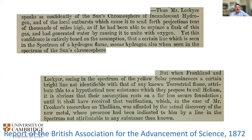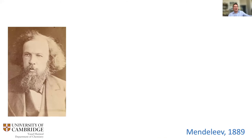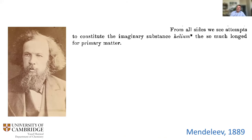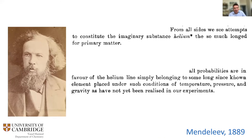Reports from 1872 were skeptical. Mendeleev, in his 1889 address, said: 'From all sides we see attempts to constitute the imaginary substance helium, the so much longed for primary matter.' He thought it was some modified spectrum of a known atom under extreme solar conditions, certainly not a new element. It took about 30 years before helium was actually discovered on Earth.